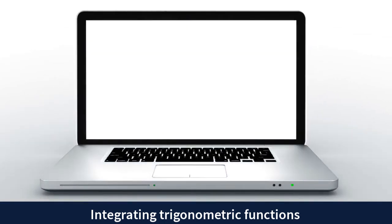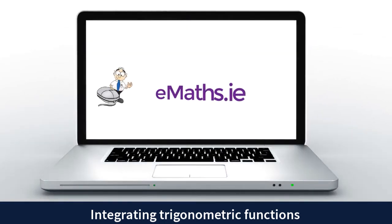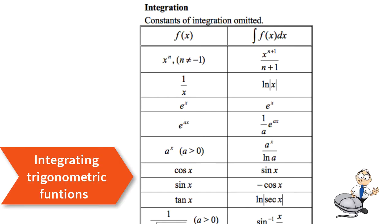Integrating trigonometric functions for Leaving Cert Higher Level students. There are two trigonometric functions that we need to be able to integrate: cosine of x and sine of x. We see in the Formulae and Tables book that the integral of cosine of x is sine x, and the integral of sine x is negative cosine x.